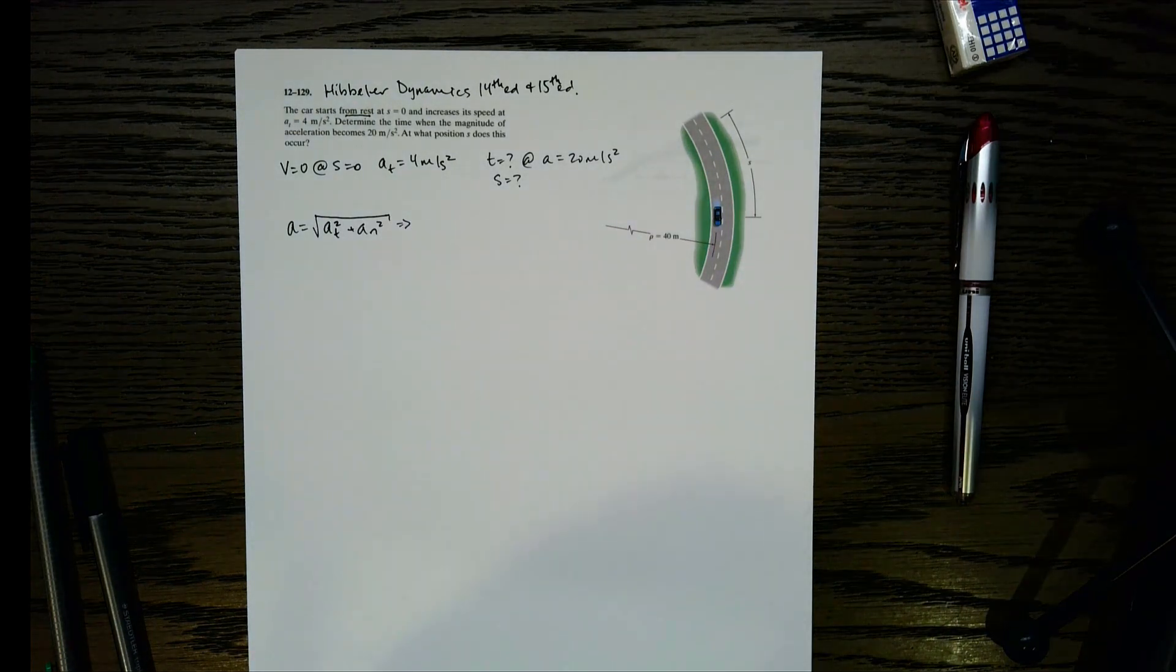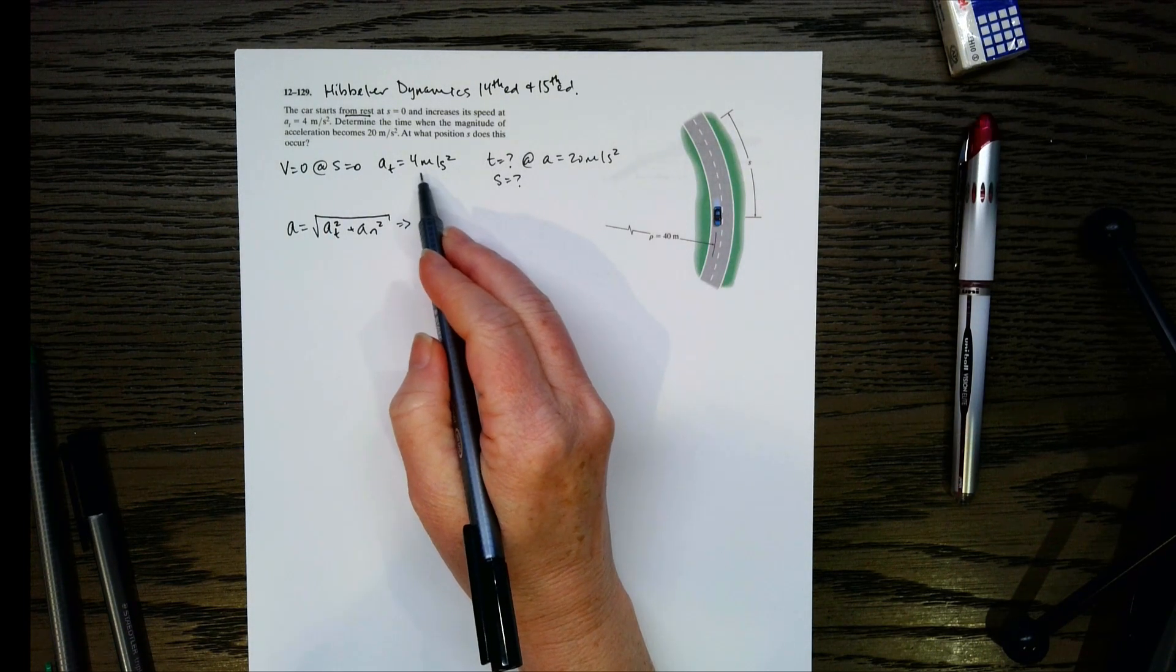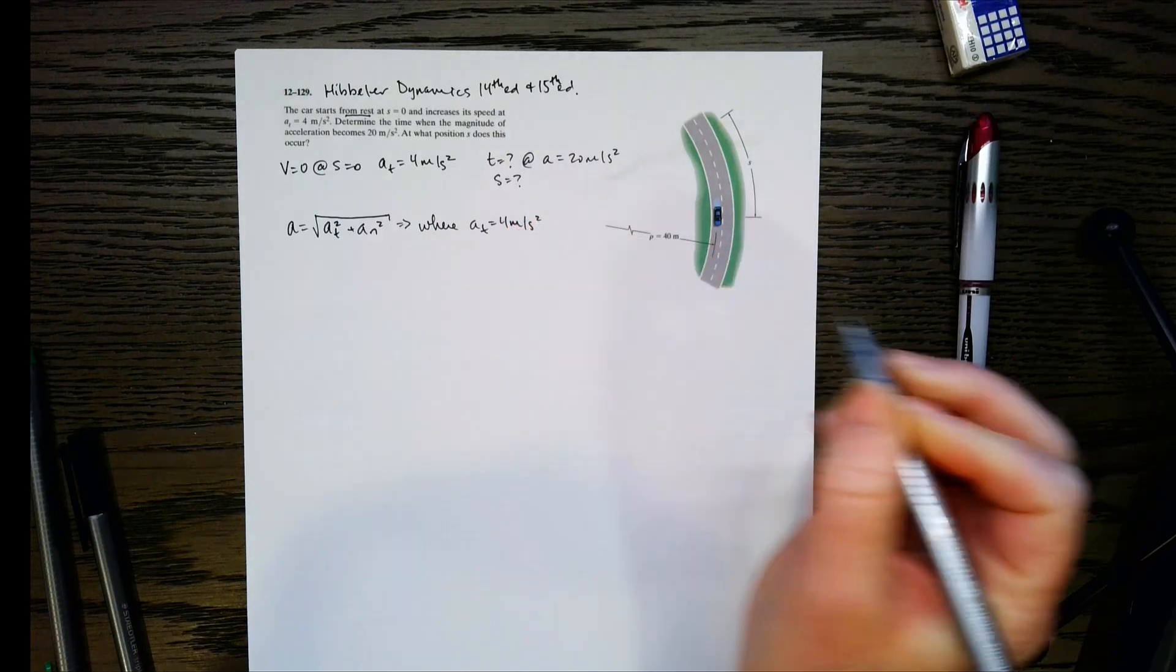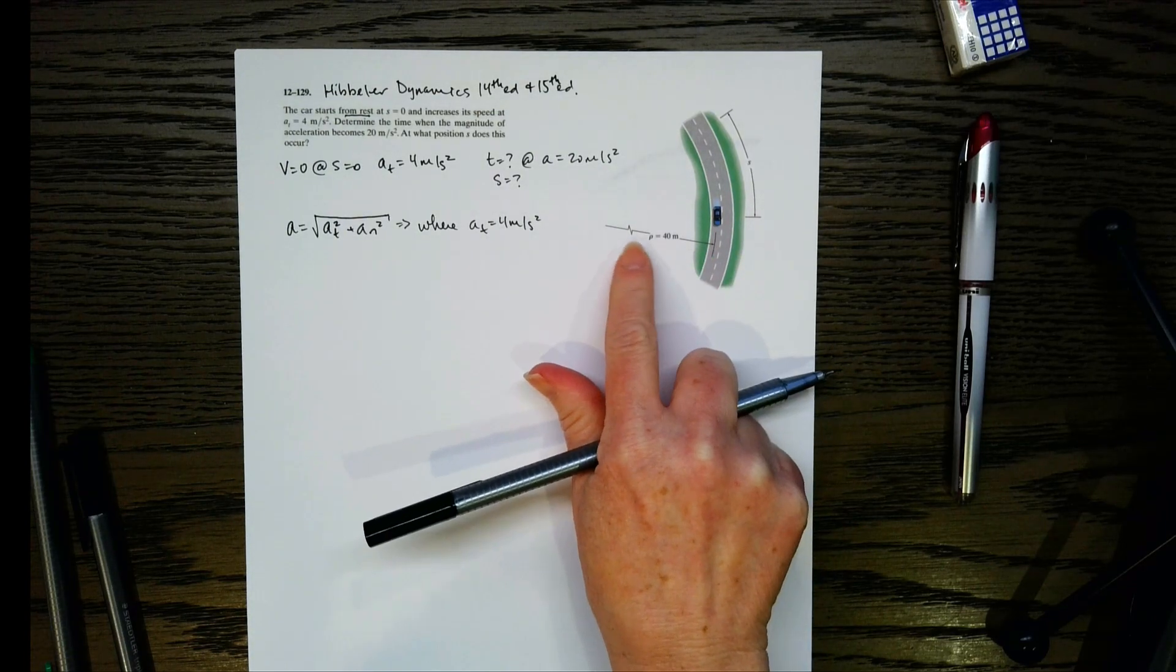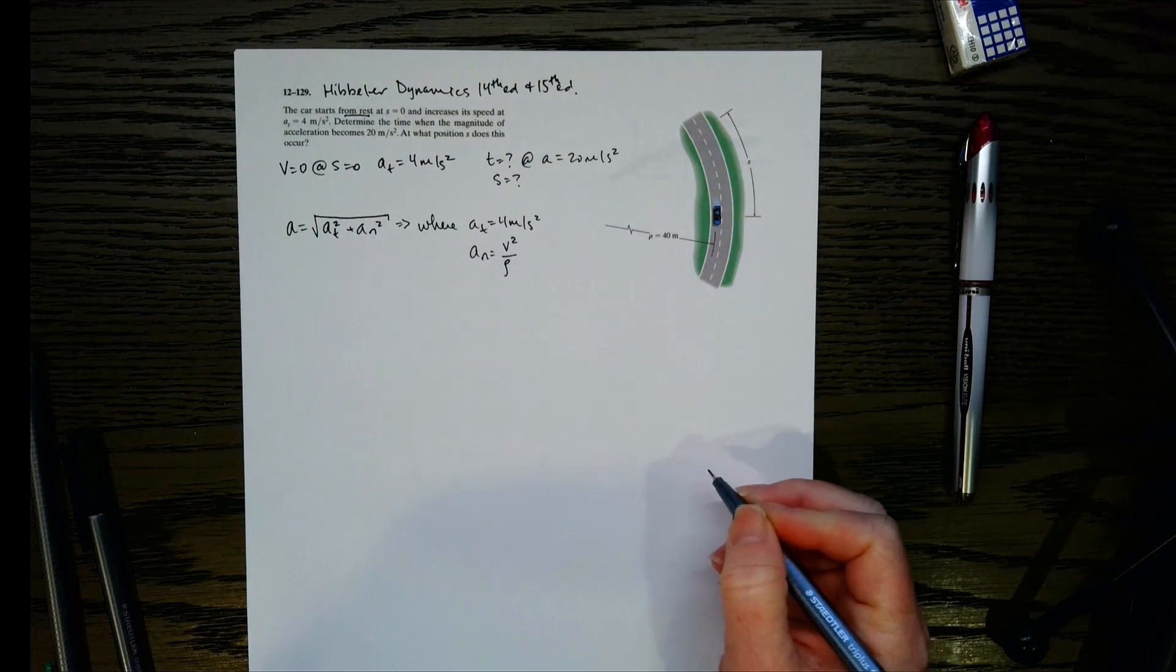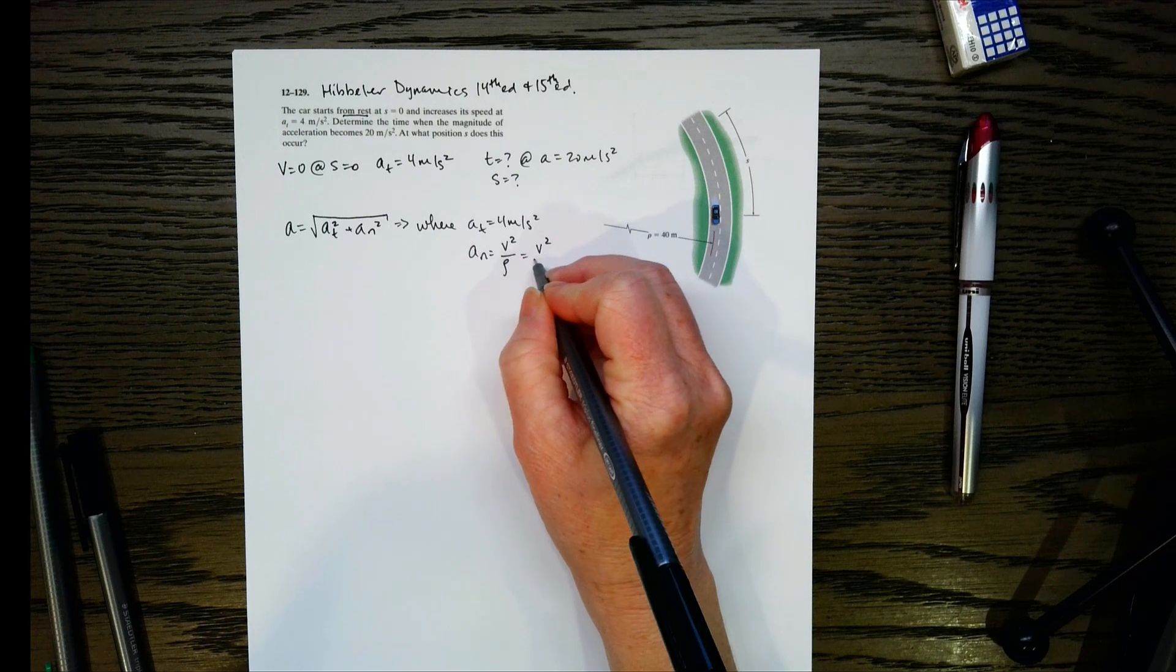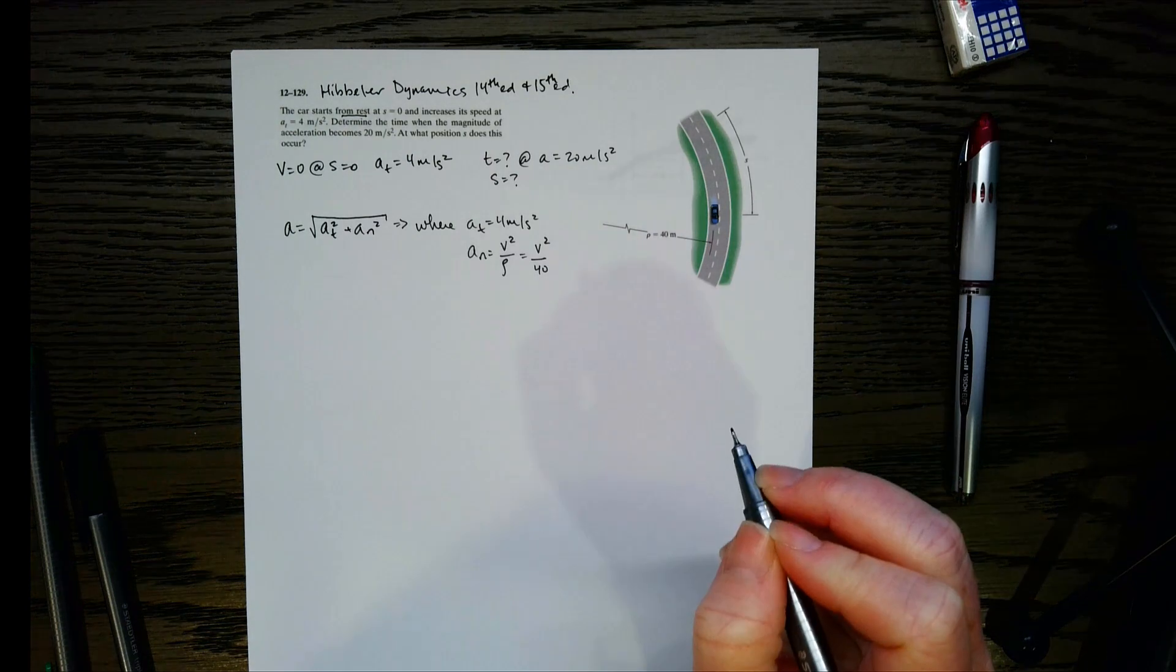So let's see what we can do with this equation. I know what a sub t is because that's the rate that the car is increasing its speed. And then a sub n, I know I have because I've got this curvature and I've got this radius here. So this is our radius of curvature. The equation we use for that is v squared over rho. We have no idea what v is, so let's just leave it as v squared. But we do know what rho is, the radius of curvature, so that's going to be 40.